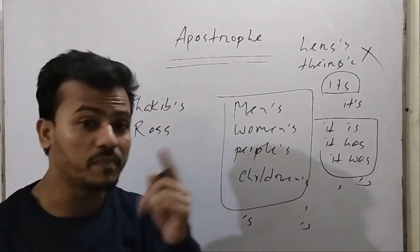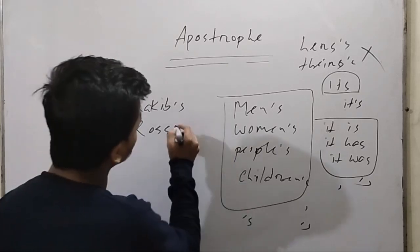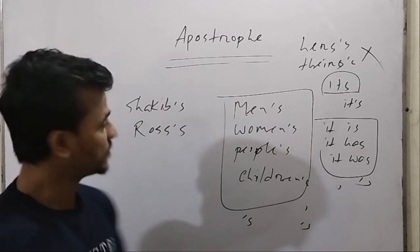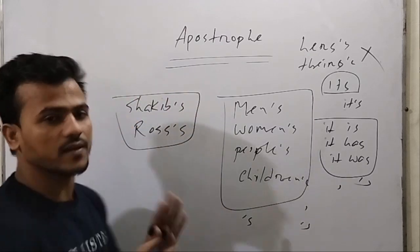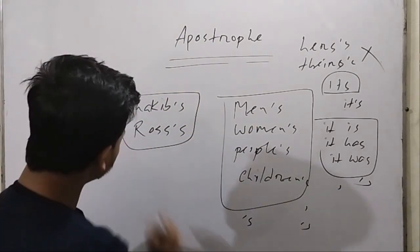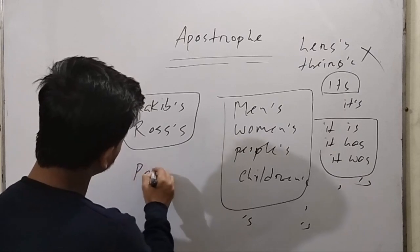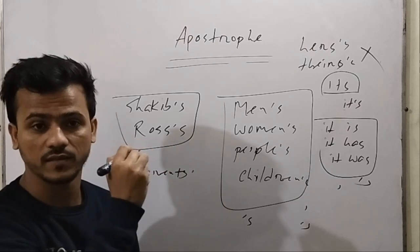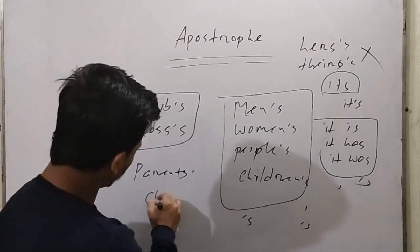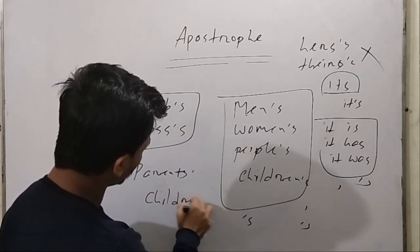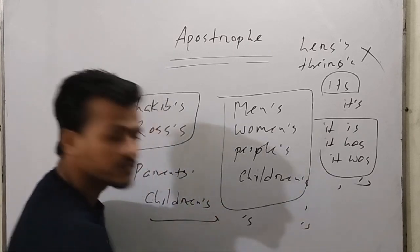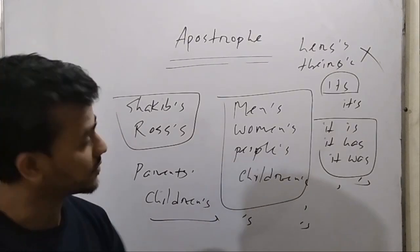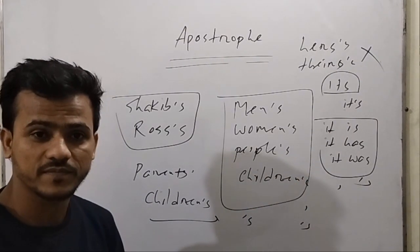Singular noun ending with S — you can use only apostrophe or both forms are correct. Singular is done and dusted. For plural nouns ending in S like parents, use only apostrophe. For irregular plurals without S, use apostrophe with S. And contracted forms — apostrophe is used there too.